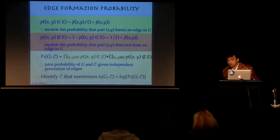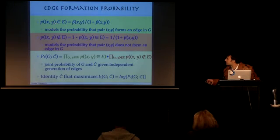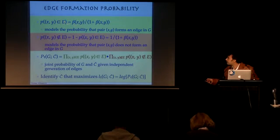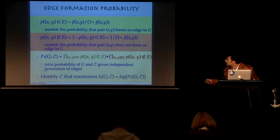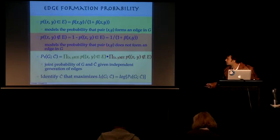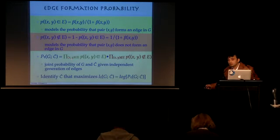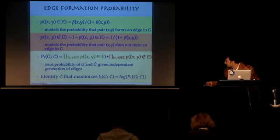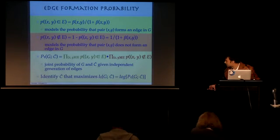From those beta values we compute edge formation probabilities. We assume the probability that there exists an edge between x and y is beta(x,y) / (1 + beta(x,y)), which is like add-one smoothing, and the complementary probability covers no edge. We then map this into a log-likelihood problem — essentially the product of the probability of having an edge between pairs of nodes and the probability that they do not have an edge. We then detect circles based on this optimization function.